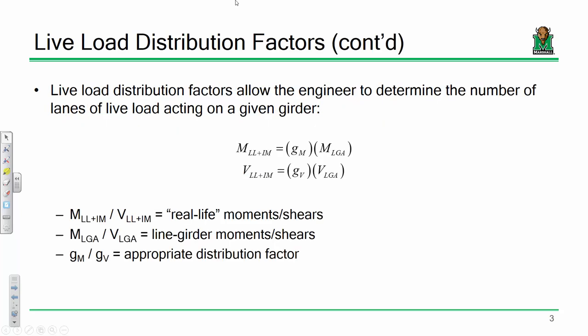The way they work is you take the moments and shears that you would obtain from a line girder analysis. A line girder analysis is just something you'd do on paper in a structural analysis homework — shear and moment diagrams. We take those moments and shears and we adjust them by appropriate distribution factors. There's a whole suite of distribution factors that we will compute, and we're going to take the worst case scenario.